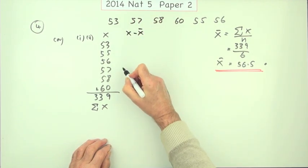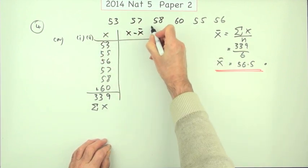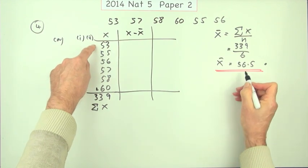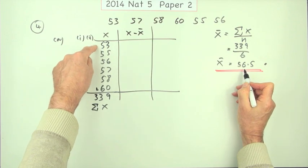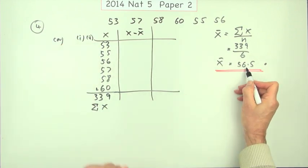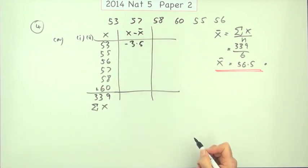So what's x minus x bar? Put lines down if you like. That means subtracting this. Use your calculator if you like. 53 minus that. Remember if you're doing a subtraction which seems the wrong way around, just think of it the other way around and call it negative. 56.5 take away 53. So negative 3.5.